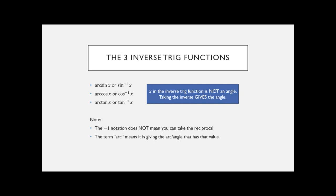When you have trig functions, if you think about it on a triangle, they give you some ratio of the sides. The inverse is the opposite: you're giving it the sides of a triangle, and then you're finding the angle associated with it. Your answer is always going to be an angle coming out of the arc sine, arc cosine, or arc tangent. You're plugging in a number that's not an angle — it's basically a ratio.